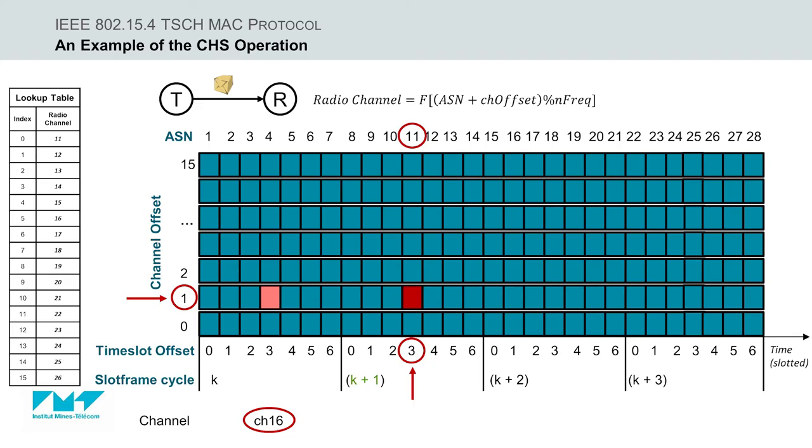In the next slot frame cycle K plus 1, where channel offset remains equal to 1, however, in this iteration, the time slot 3 is on ASN 11.